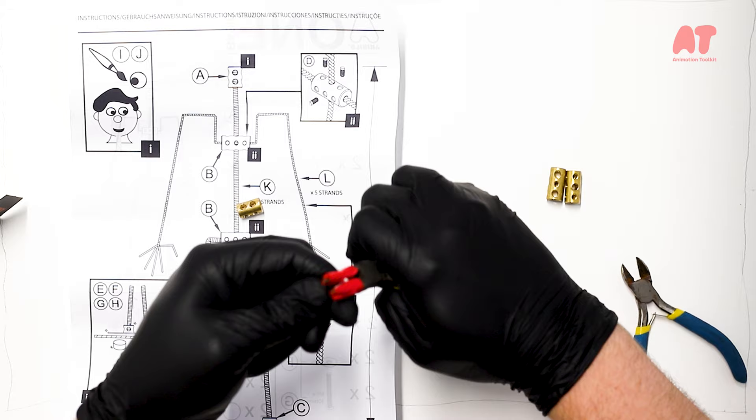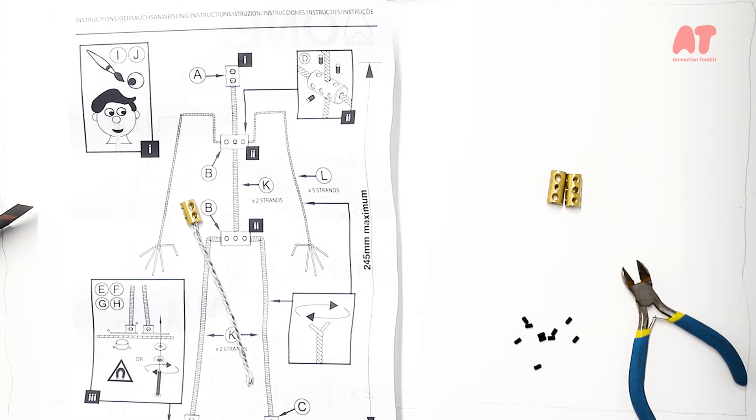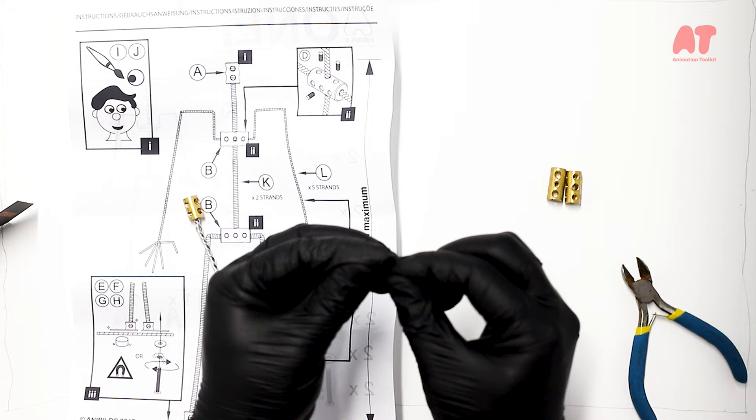I'll just tweak those ends to make sure they go into the holes of the brass bosses. As you can see, that one fits quite nicely. You'll also notice the ends of these pliers are wrapped in tape, not to damage the aluminum wire too much.